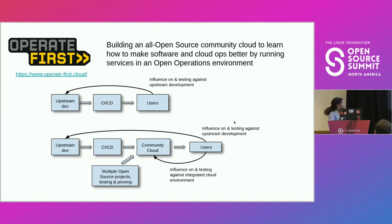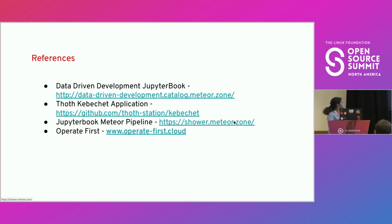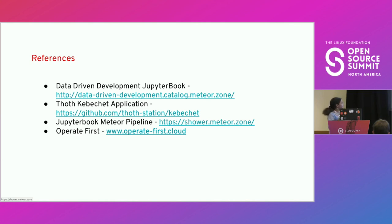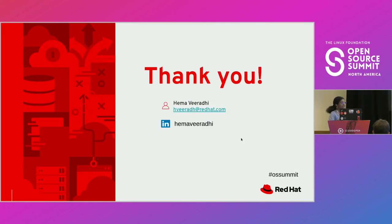These are some references in terms of material I covered — one being Operate First, the Kebushet application or service that was managing all the Python dependencies, the repository where we were tracking all these metrics, making that standalone Jupyter book rendering, and so on. These are some URLs to get started with all of this work. Thank you for attending my talk. Feel free to connect if you have any questions, but happy to answer anything now as well.